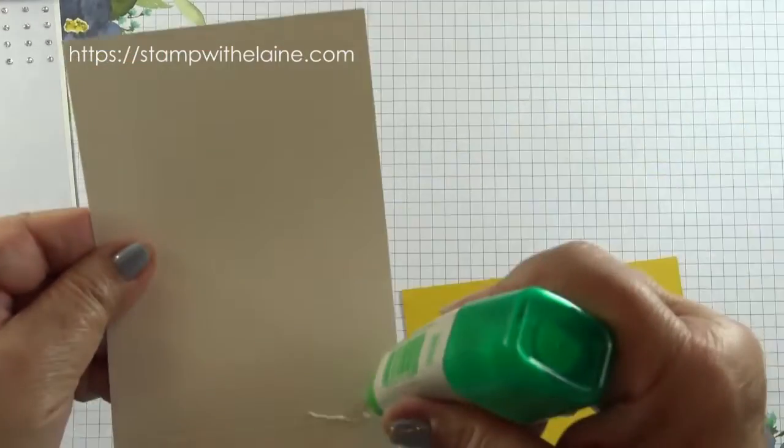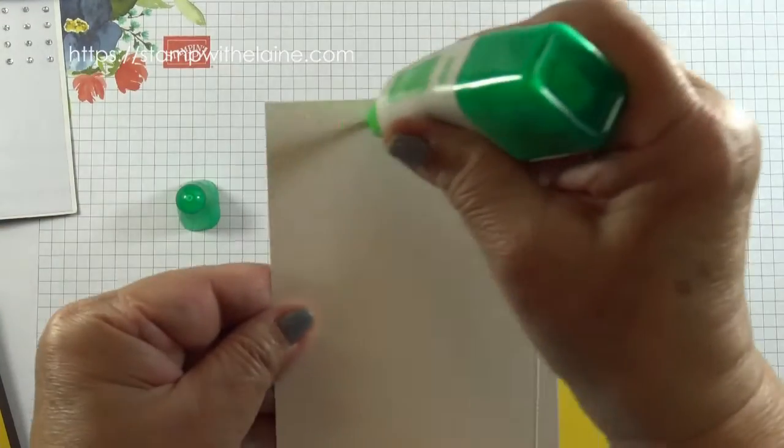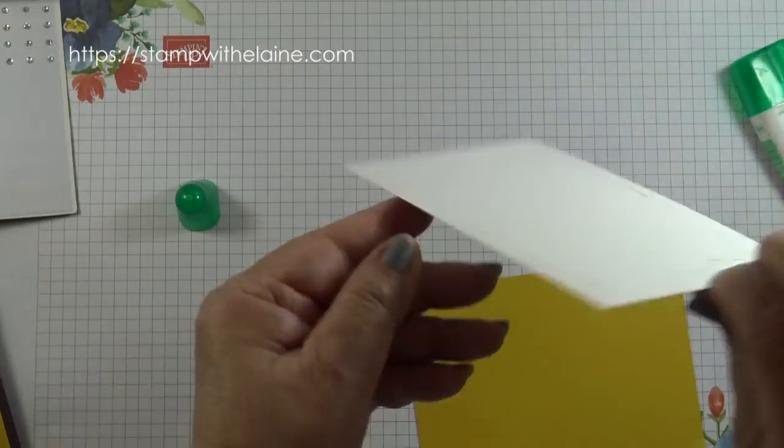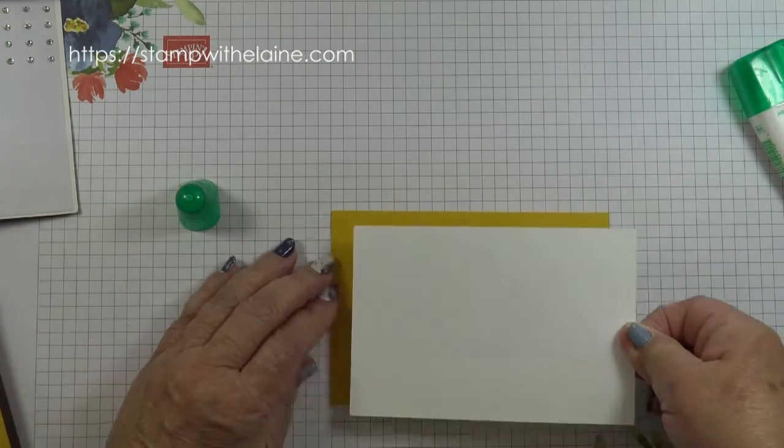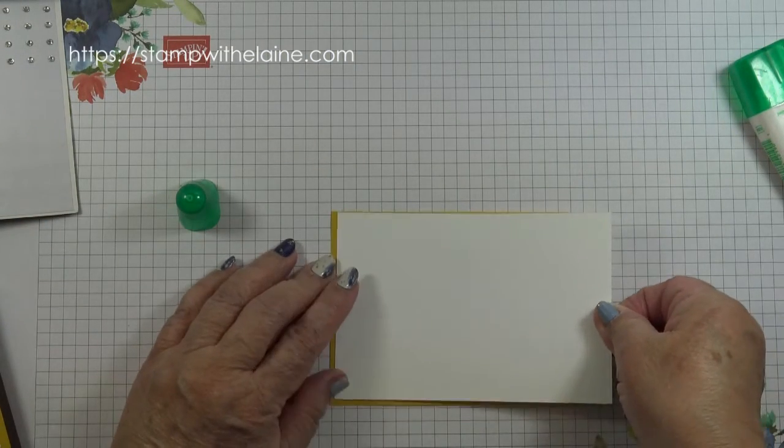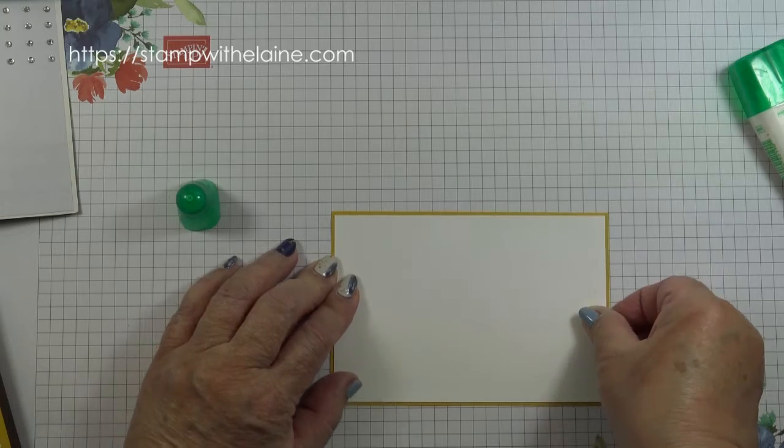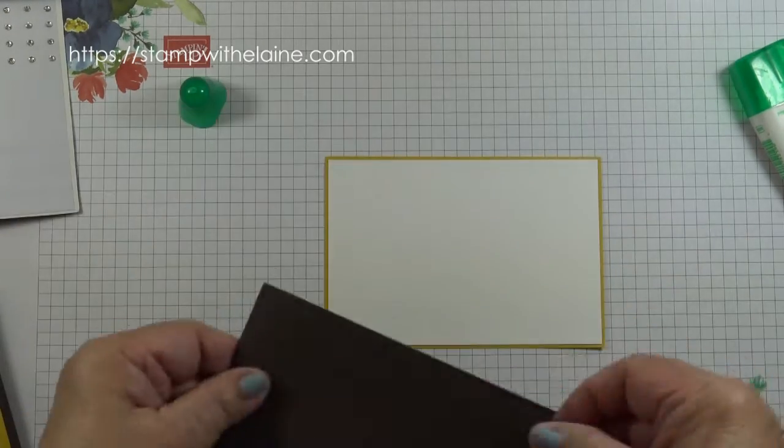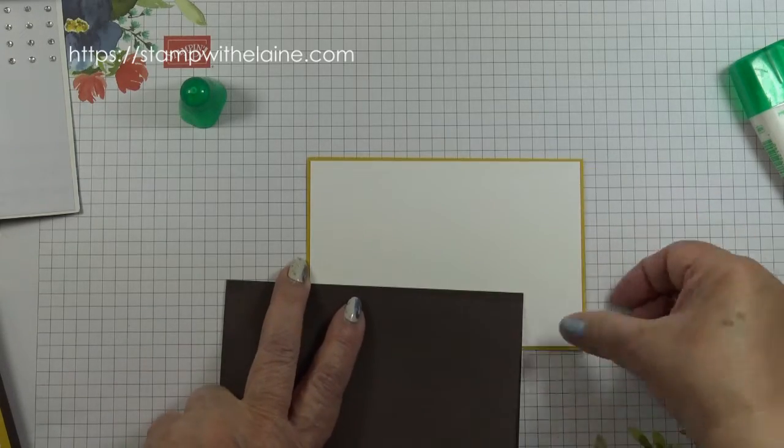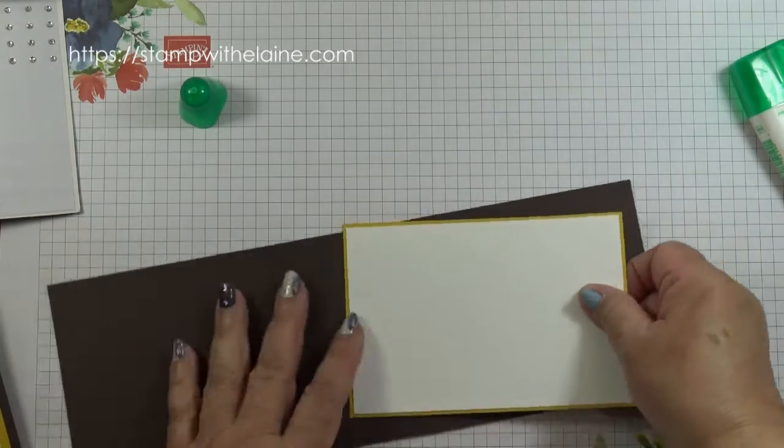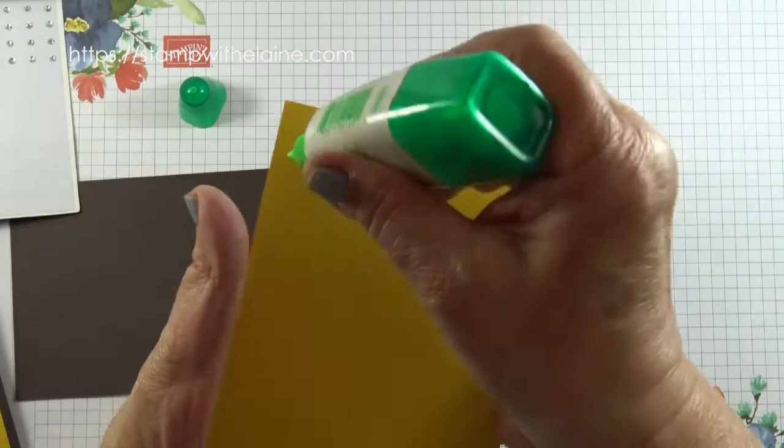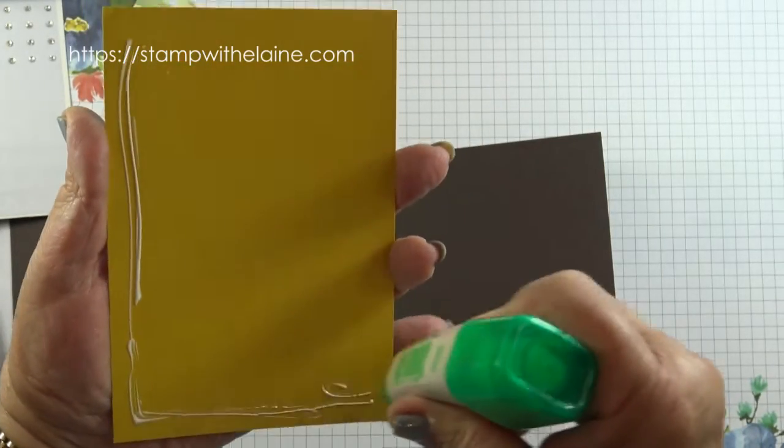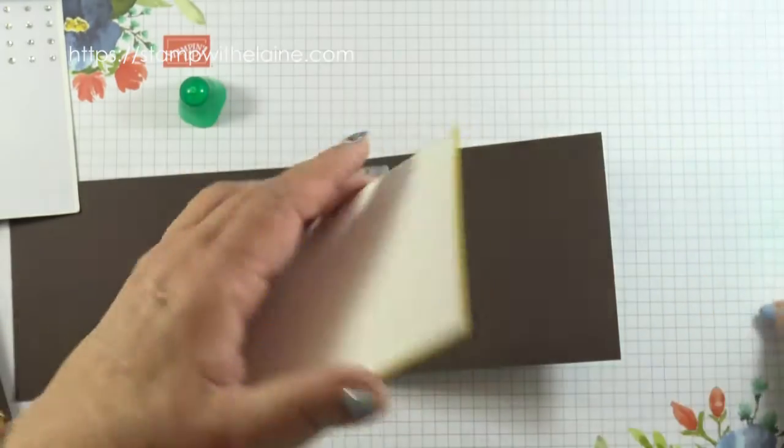Now I'm going to glue the inside of my card together so I'm gluing this basic white piece on top of the Mango Melody one leaving an even border all round. Then I'll glue it to the inside of the card. That's why I'm not worried about doing it now because I'm stamping in the center of the card and I'm not stamping off the card so I can glue that straight away.